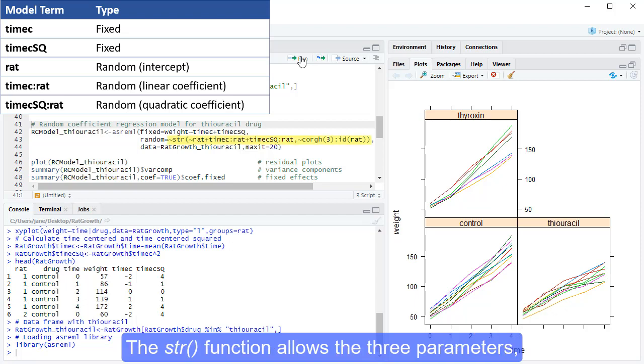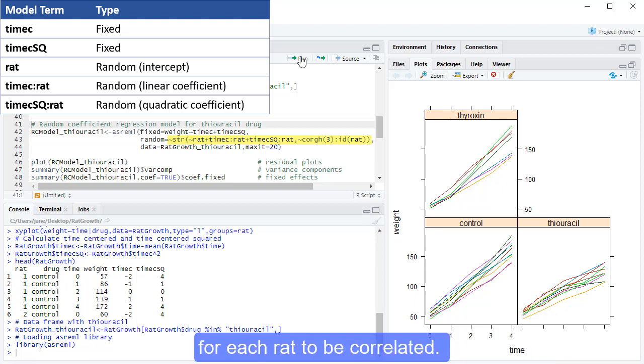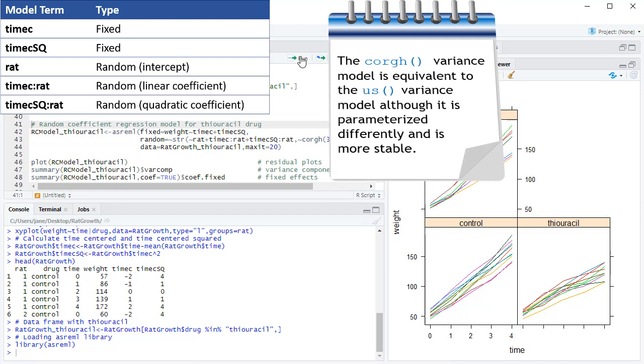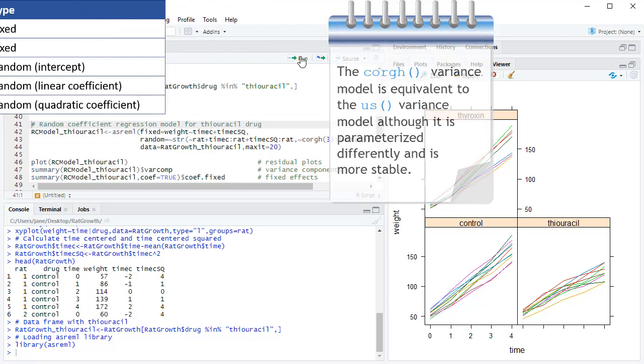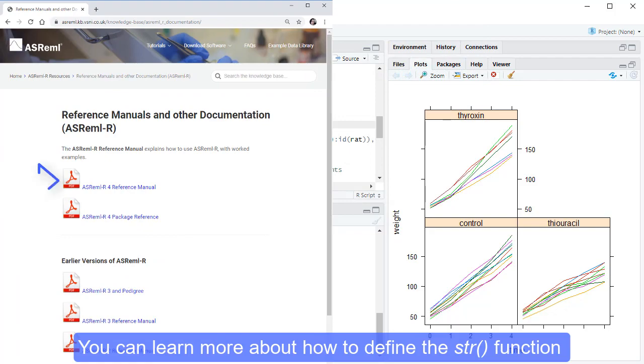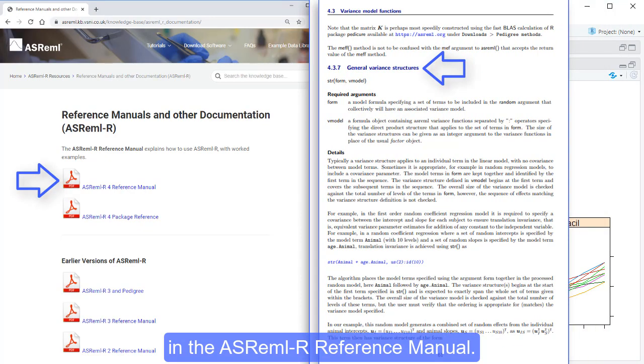The STR function allows the three parameters, the intercept, and the quadratic polynomial coefficients for each rat to be correlated. The CORGH variance model is equivalent to the US variance model, although it is parameterised differently and is more stable.